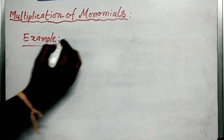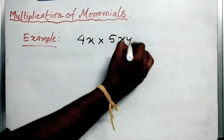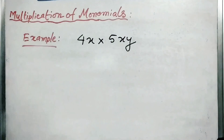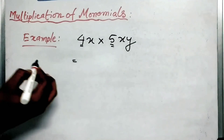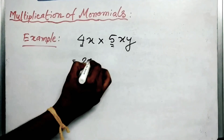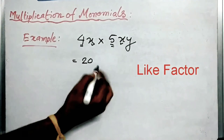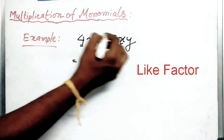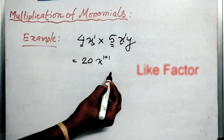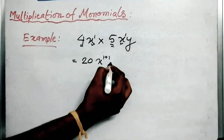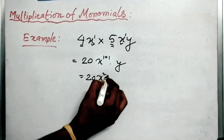So let's go for an example: 4x into 5xy. Here 4 and 5 are constant terms — they will be multiplied together first, so 4 into 5 is 20. The power of x is 1 and the other power of x is also 1, so 1 plus 1 gives x squared. And y is left alone. So the answer will be 20x squared y.